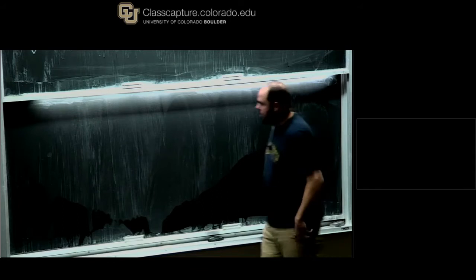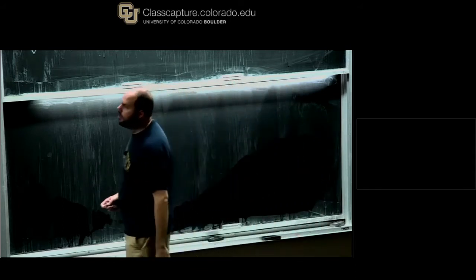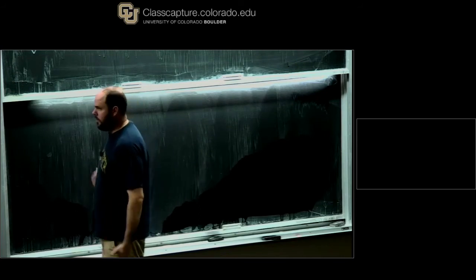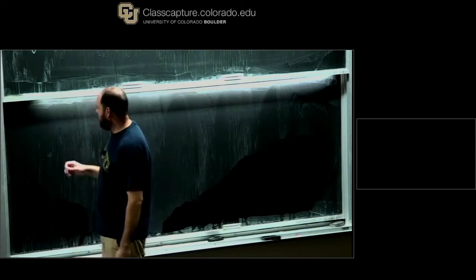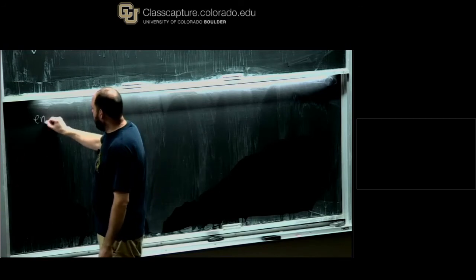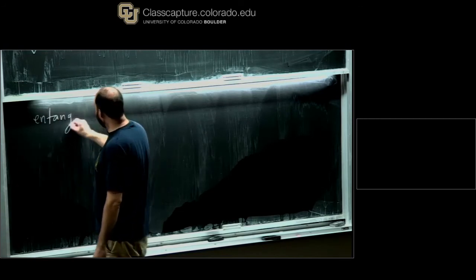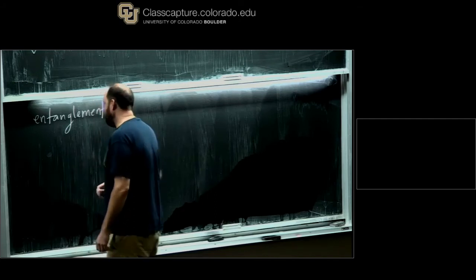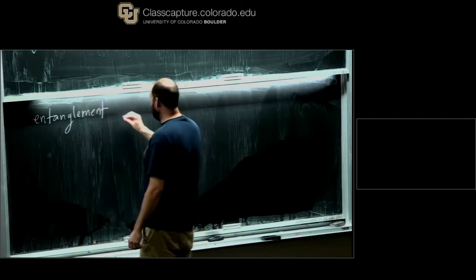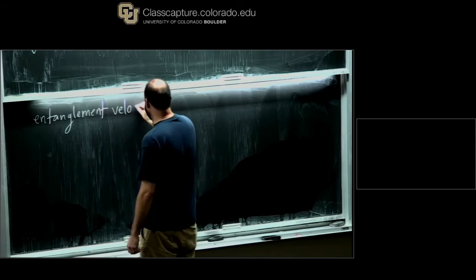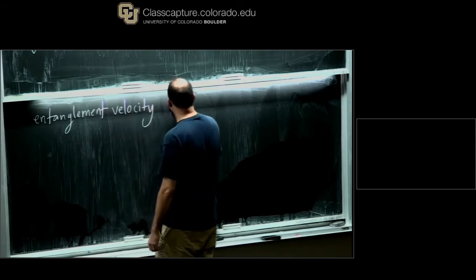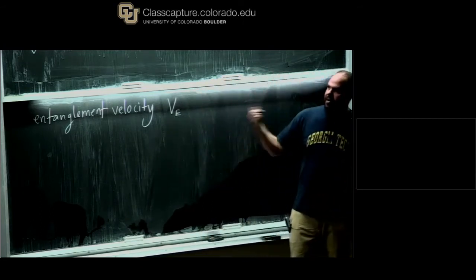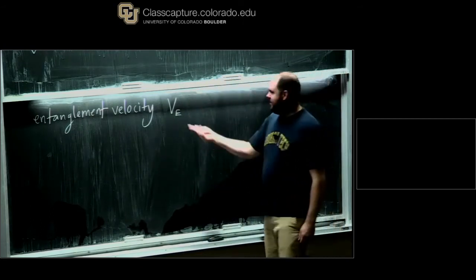I want to mention one additional thought experiment before we get to the more microscopic picture. We're going to discuss the entanglement velocity, which I call V_E. So I had V_I, V_B, V_LR, and now V_E. The name is arguably not the best, but let's talk about it.